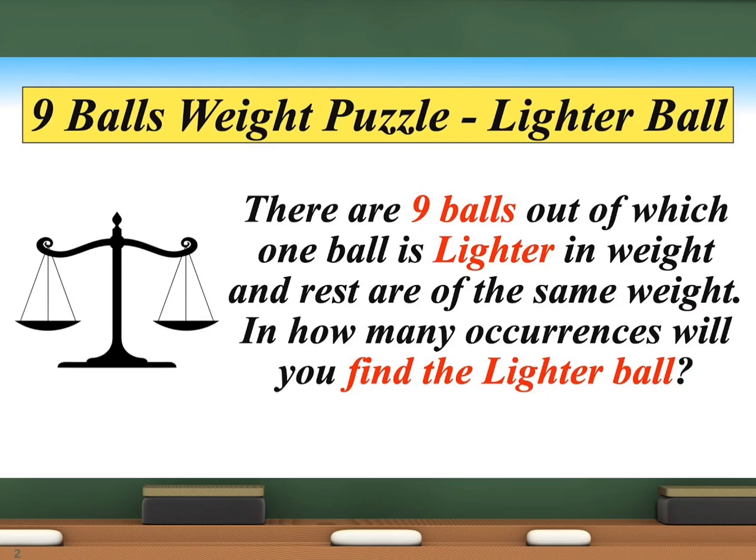There are 9 balls out of which one ball is lighter in weight and rest are the same weight. In how many occurrences will you find the lighter ball? You are also given a physical balance to weigh the balls.